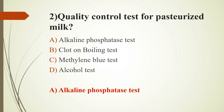Option C: Methylene Blue reduction test is used to detect the adequacy of raw milk. It is a rapid test. The test depends on the reduction of methylene blue by bacteria in milk when incubated at 37°C in complete darkness. The rate of reduction is related to the degree of bacterial contamination. Raw milk is considered satisfactory if it fails to reduce the dye in 30 minutes under standard conditions.